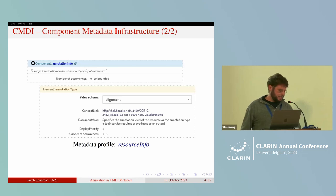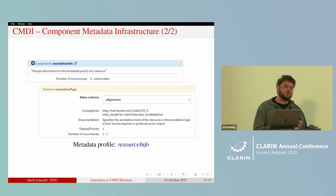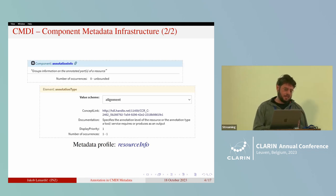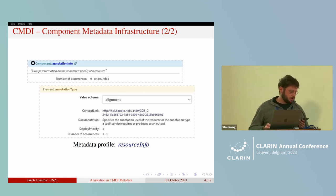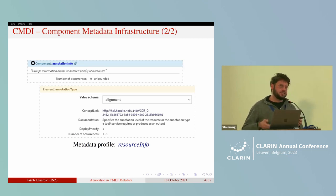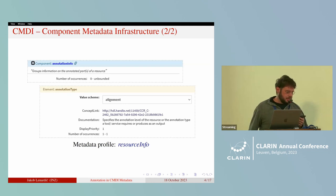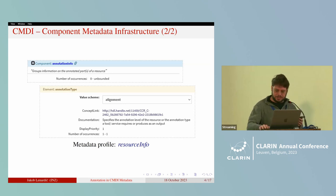A repository's adoption of CMDI is actually a requirement for getting B-center certification. On the next slide, I have an example of what the metadata component for annotation looks like in the component registry. A constituent element of this annotation info component is the annotation type element, specified by values running the gamut of several annotation types like part-of-speech tagging, alignment, lemmatization, and so on. This element is also furnished with a concept link which facilitates interoperability when differently named elements refer to the same thing. This component is from the resource info profile, which I'll be returning to.